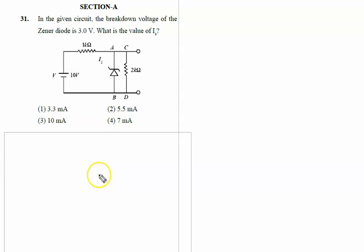In the given circuit, the breakdown voltage of the Zener diode is 3V. Here breakdown is given to us 3V. What is the value of IZ? IZ means current passing through the Zener.